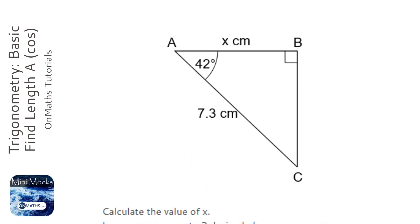We're given a right angle triangle and asked to find one of the lengths. We have a length and an angle. Whenever we have this situation, it's going to be trigonometry that we're using.